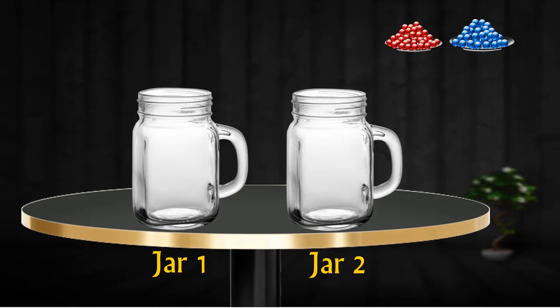The chances of choosing jar 1 at random is 50% so its probability is 0.5. Similarly, the probability of choosing jar 2 is 0.5.